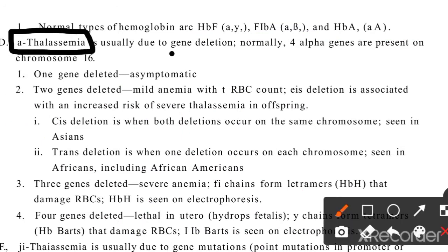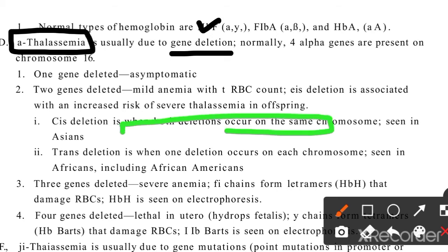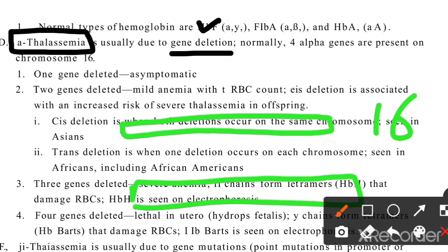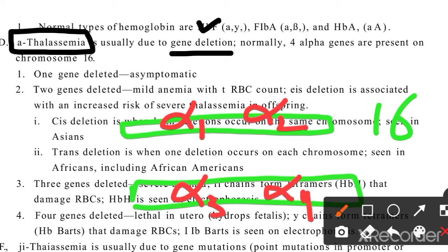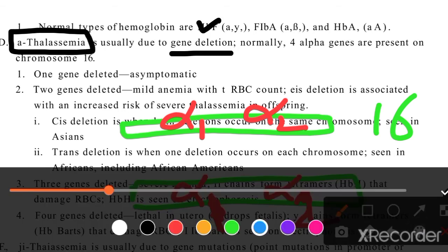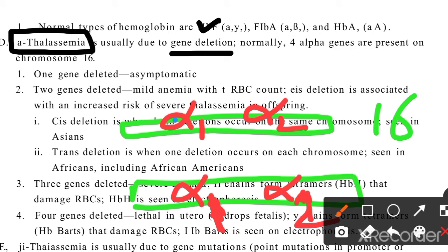Now regarding alpha thalassemia — it is caused by gene deletion on chromosome 16. There are normally four alpha genes because there are two alleles on two chromosomes, giving four alpha genes total. If one gene is deleted, the patient is asymptomatic — a silent carrier. If two genes are deleted, the patient has mild anemia — alpha thalassemia trait.